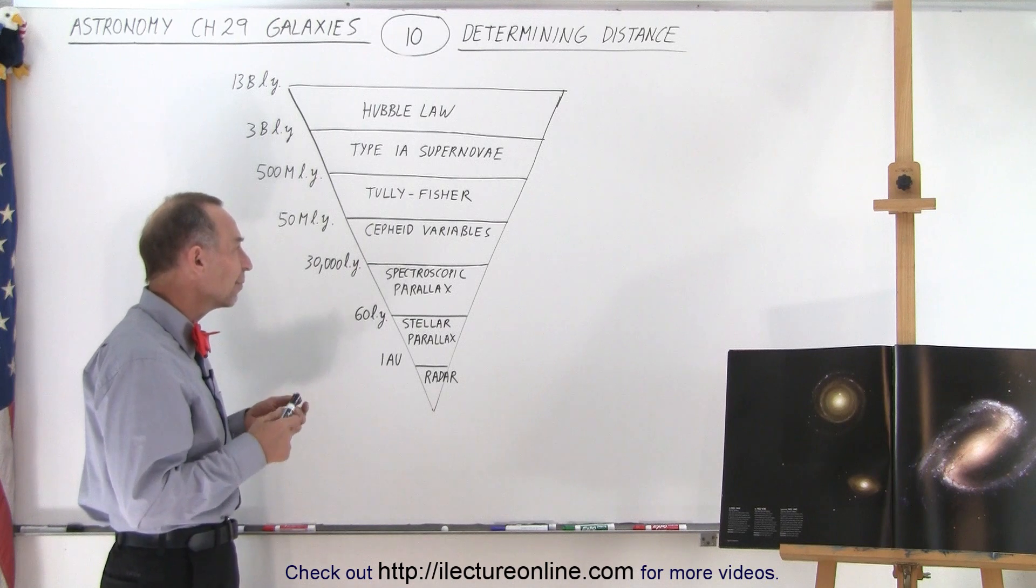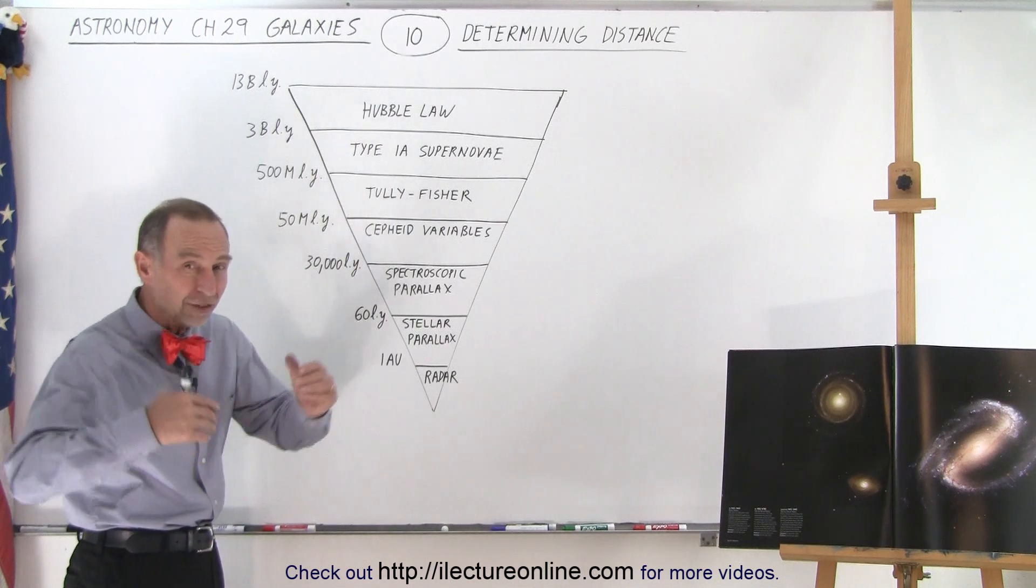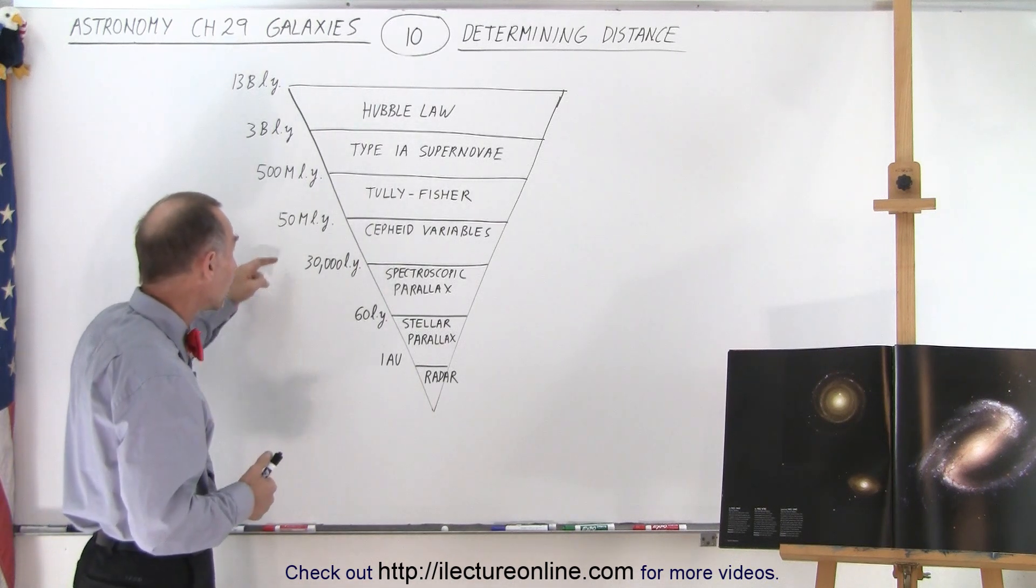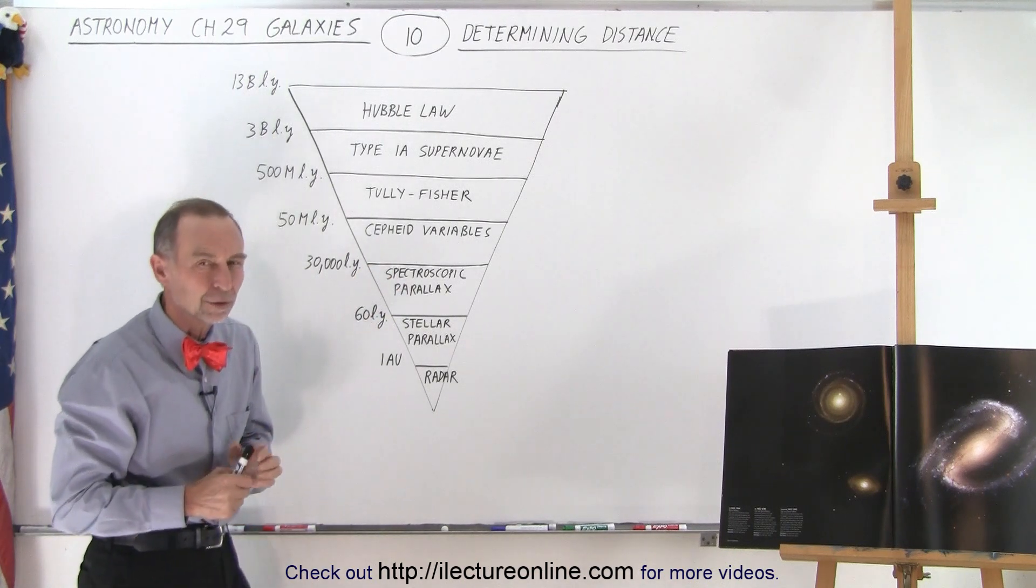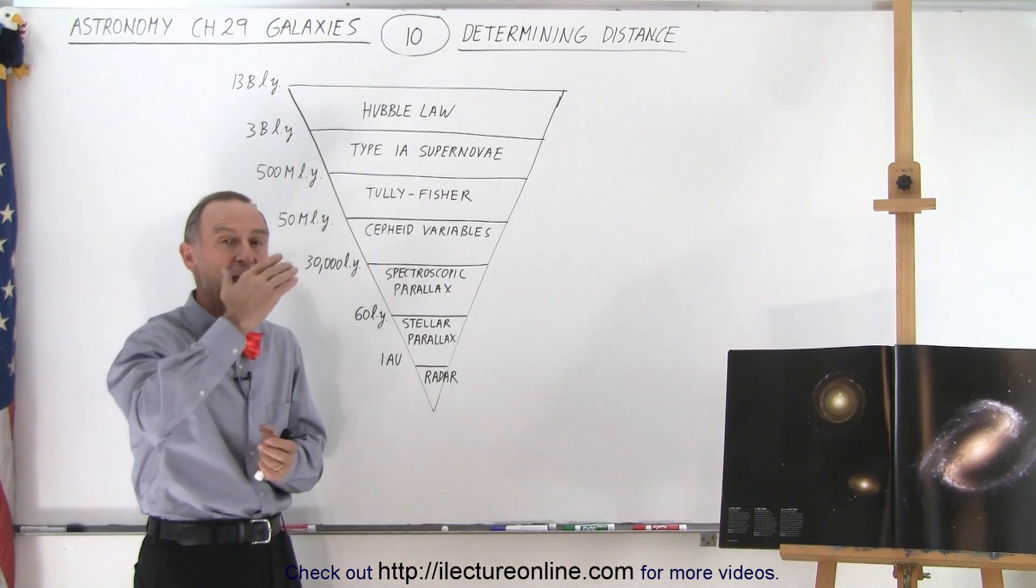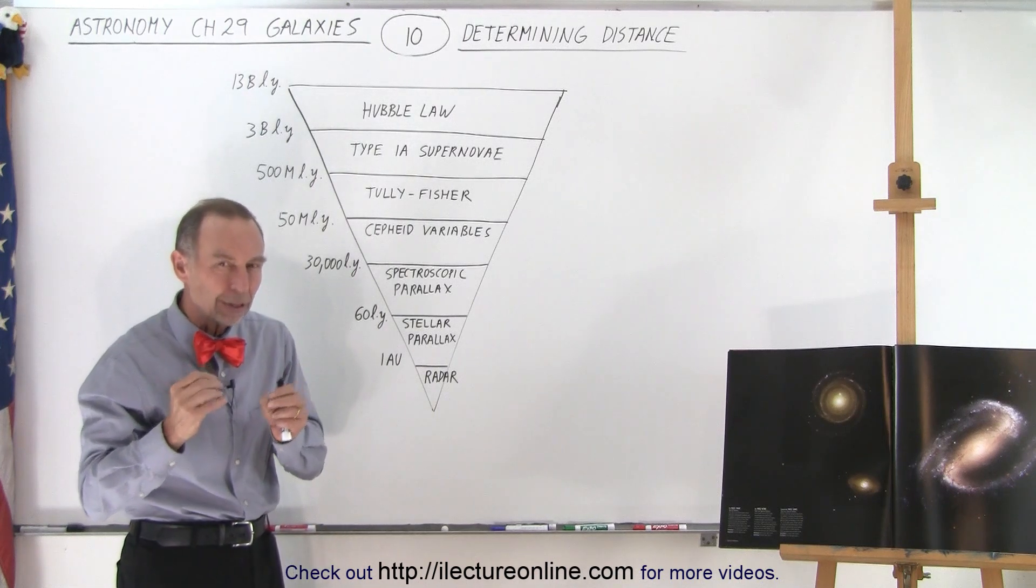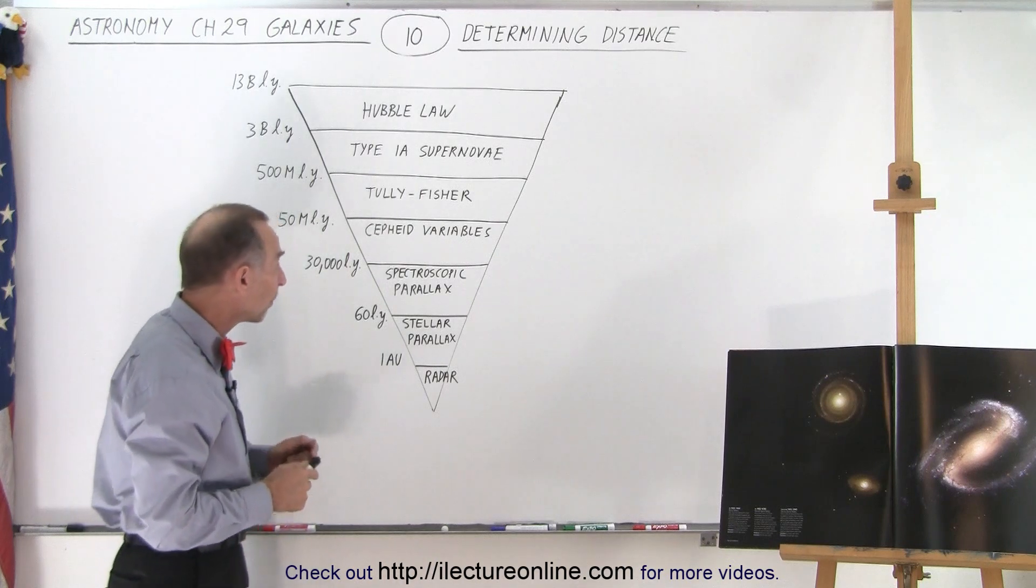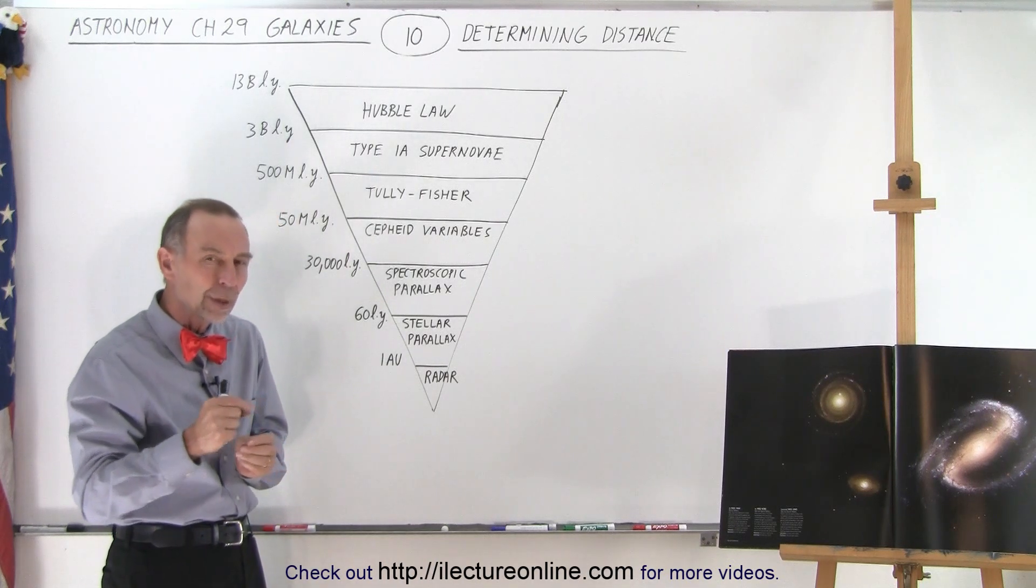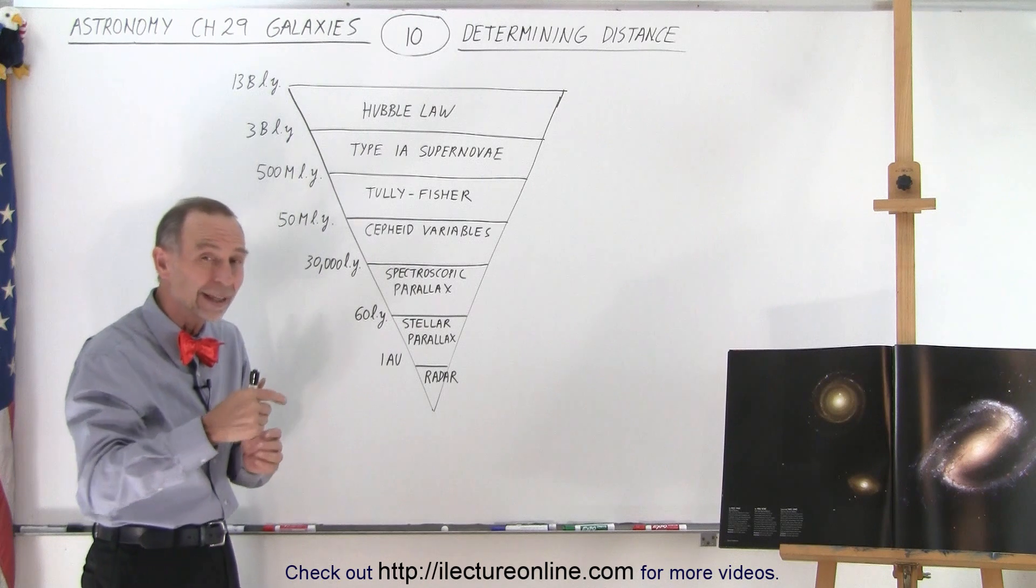Beyond that, if we start looking at other galaxies out to about 50 million light years, we can use what we call Cepheid variables - variable stars that have a changing intensity with periods typically between one day and 100 days. By looking at their periodicity, we can determine their intrinsic brightness, then measure their apparent brightness, and from that figure out the distance to those stars.